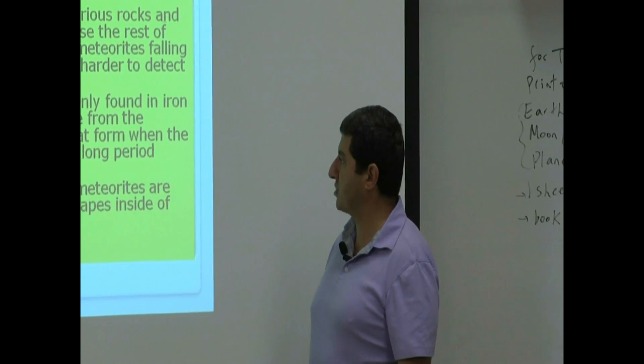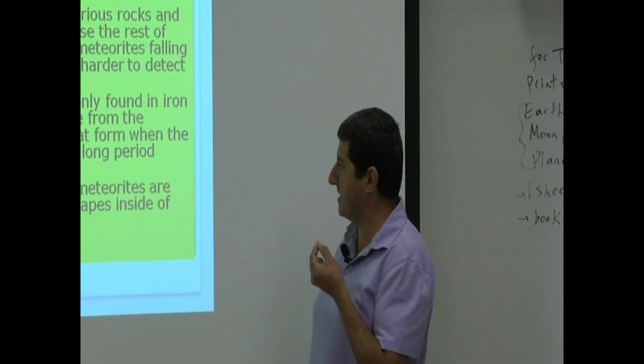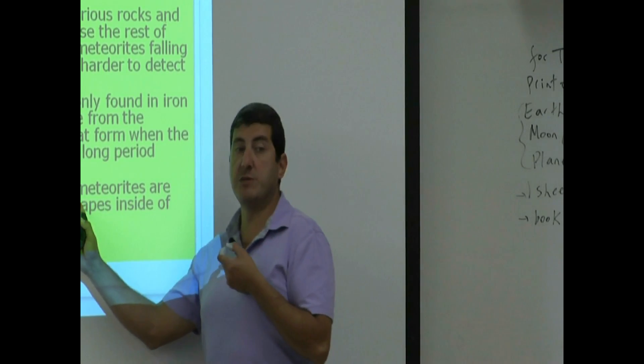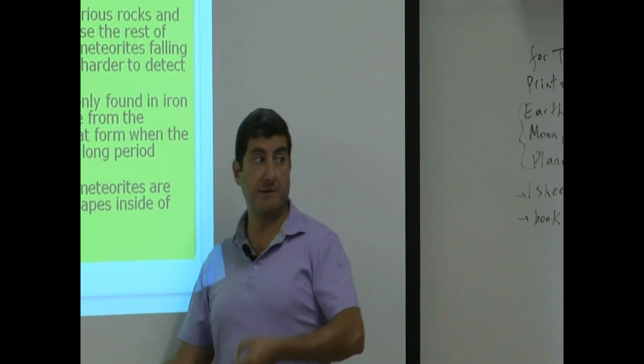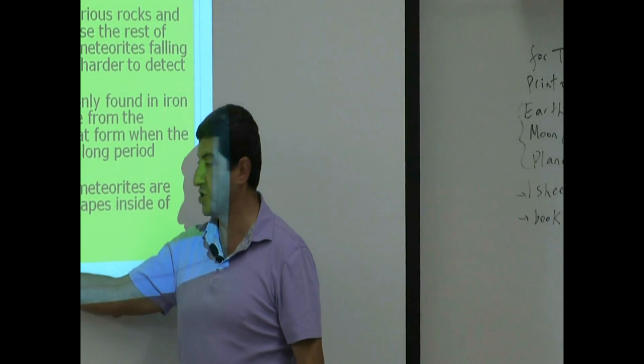On the other hand, some stony meteorites are distinguished by the spherical shapes inside of them called chondrules. So that's how you would be able to pick out if an object is a stony meteorite. You would look to see if it has these chondrules.